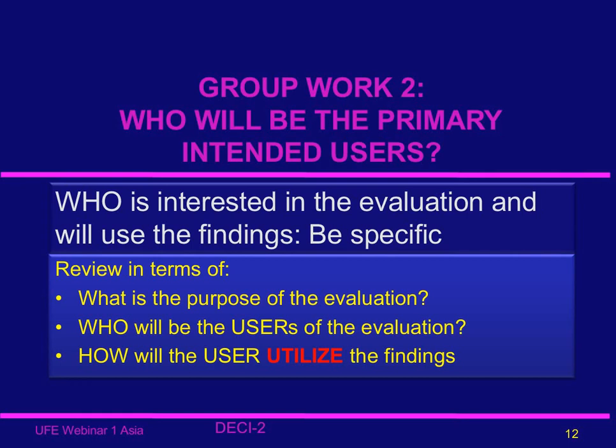So let's start with our second group work exercise. Each of the project teams will identify the primary intended users. We've just discussed the various qualities of the PIU, and that should be a good starting point for discussion. Think about all the people who will be interested in the evaluation and will definitely use the findings. Be specific and spell out who those individuals are by name. Some of the questions that will guide you in choosing the users are listed here.